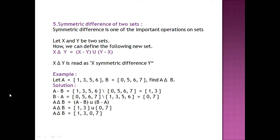So A minus B is calculated — it is {1, 3} (elements in A not in B, since 2, 3 are not in B — actually 1, 3 are those not in B).